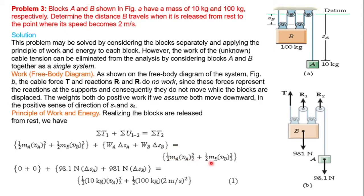Final kinetic energy of B is half M_B times V_B squared. Initially both blocks are at rest, so initial kinetic energy is zero. Weight equals mass into g. Displacement of A is delta S_A. Weight of B equals mass into g, displacement delta S_B. Velocity of A is unknown; velocity of B is given as 2 meters per second. Final velocity is given, released from rest.